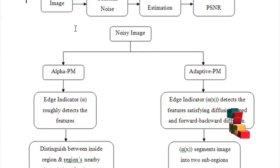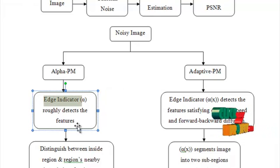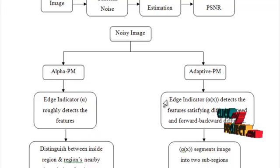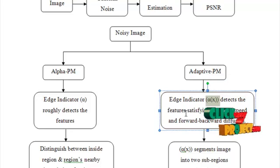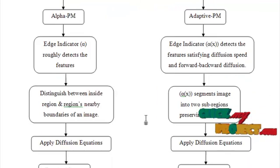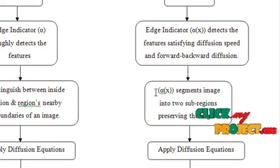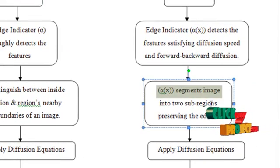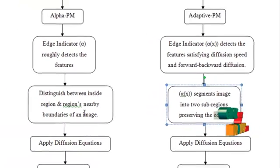In alpha PM, the edge indicator described as alpha will roughly detect the features. The edge indicator alpha is modified to detect features, satisfying diffusion speed and forward-backward diffusion. The detected features must distinguish between inside regions and the regions nearby boundaries of an image. Alpha of X itself segments the images into two sub-regions, thereby preserving the edges.